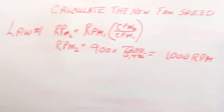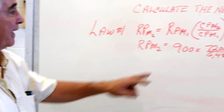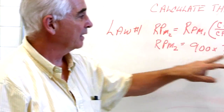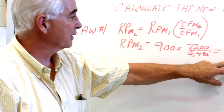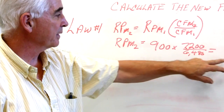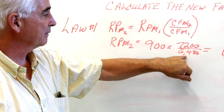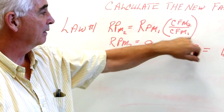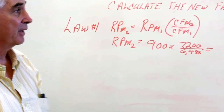So if we increase the fan speed from 900 to 1,000 RPM, we'll increase the CFM from 6,480 to 7,200.